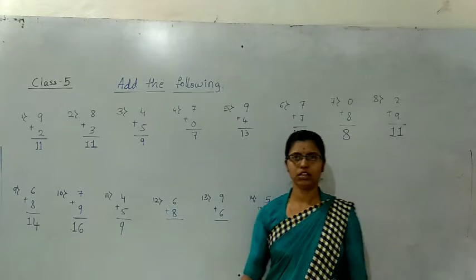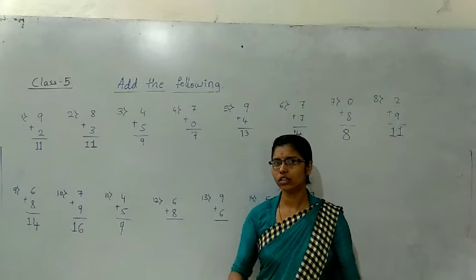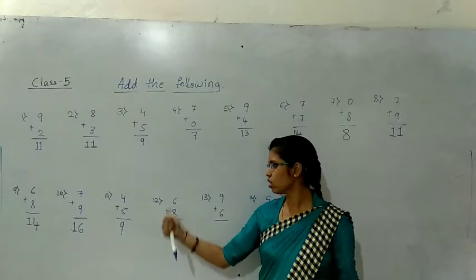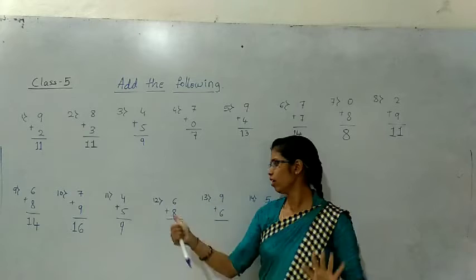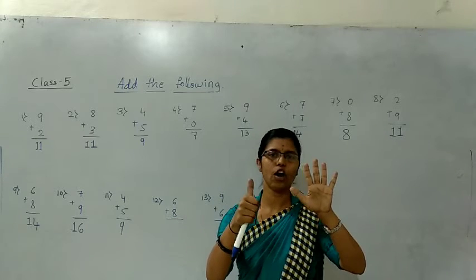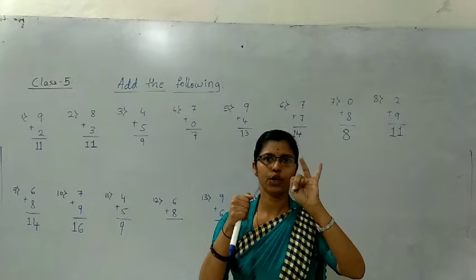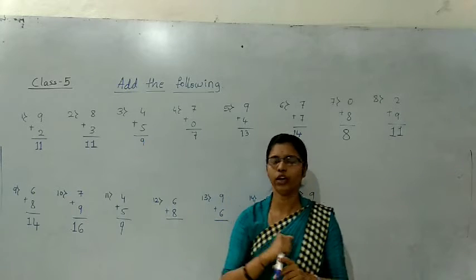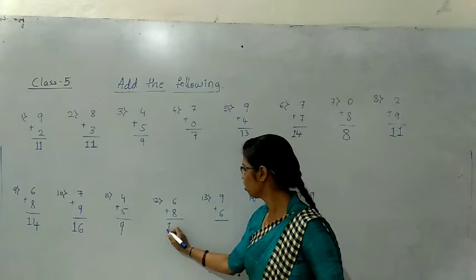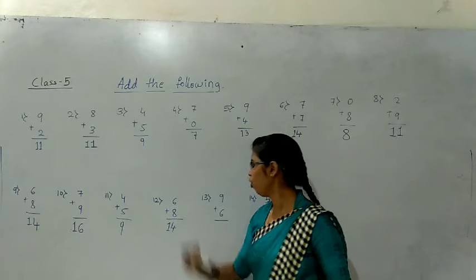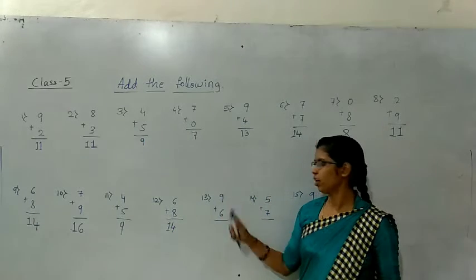Next — hold 6 fingers because the above number is 6. The below number is 8. After 8: nine, ten, eleven, twelve, thirteen, fourteen. The answer is 14.